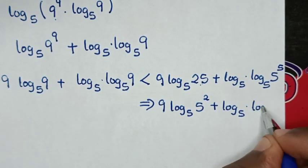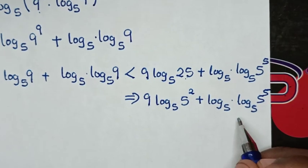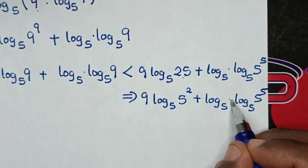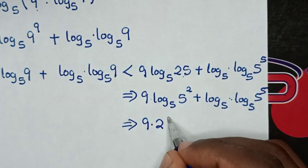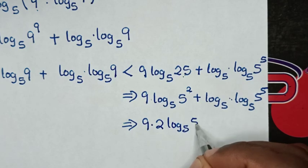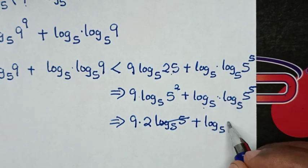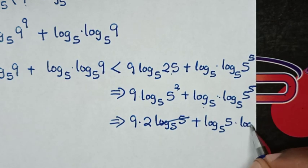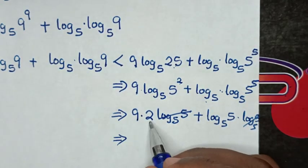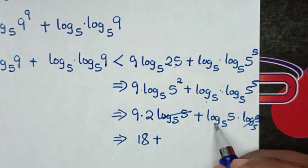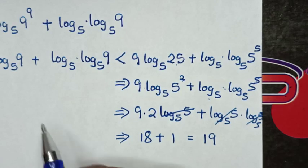We also have plus log base 5 of (5 power 5). The power 9 moves to the front giving 9 times 2 times log base 5 of 5, which cancels to 1. Plus the power 5 moves to the front giving 5 times log base 5 of 5, which also cancels to 1. So we get 9 times 2 is 18, plus 1, equals 19.